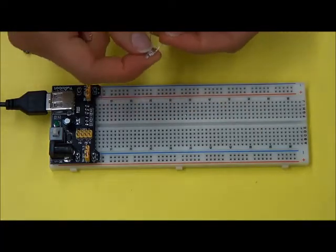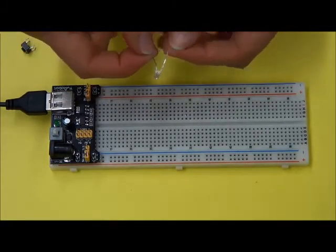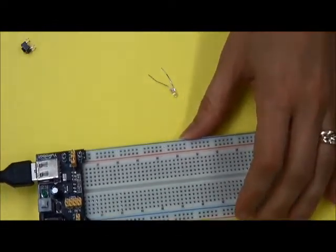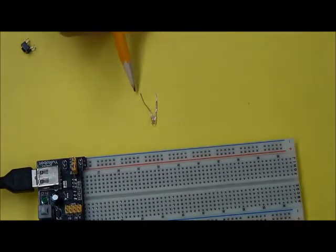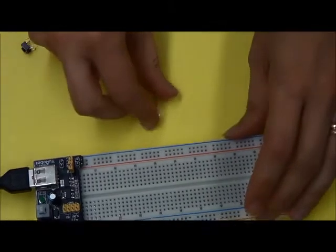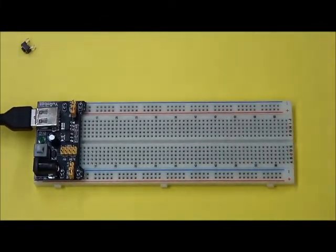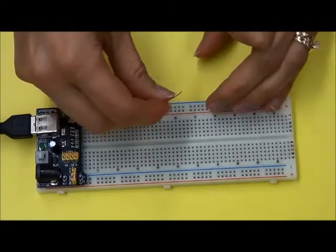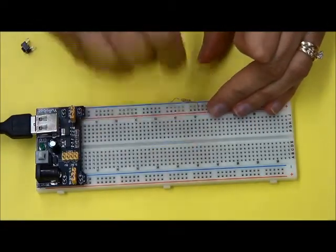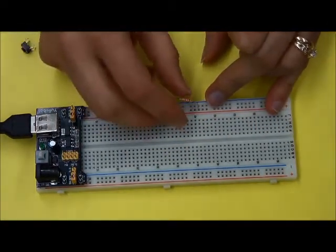With an LED, it has two legs. One is long and one is short. And the short leg is always going to go to ground. The longer leg is going to go to power. So I'm going to first attach my resistor. I'm going to go into the power bus. That's the red bus.